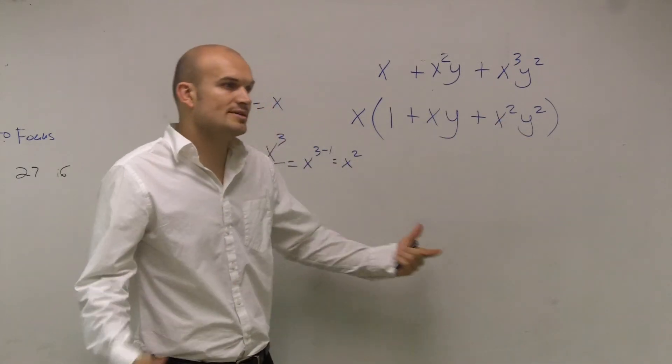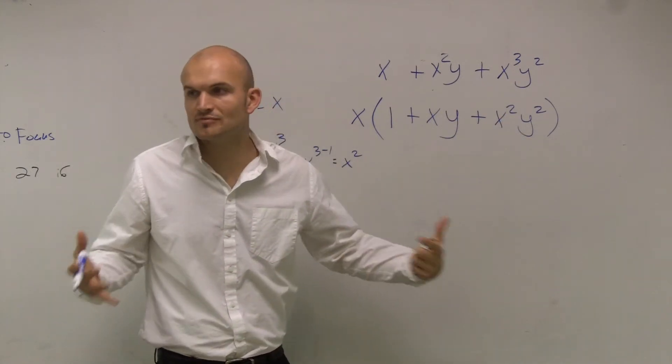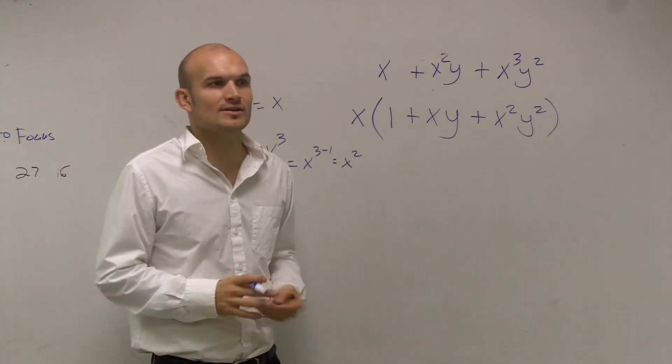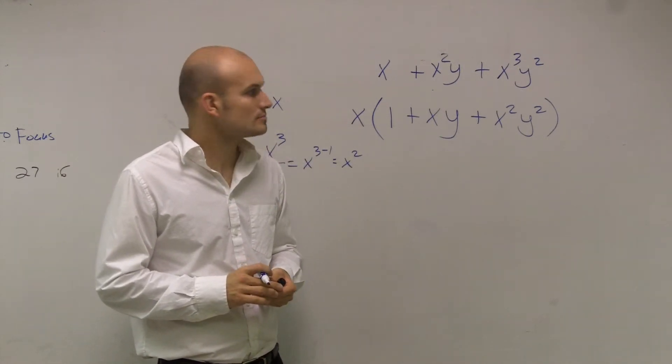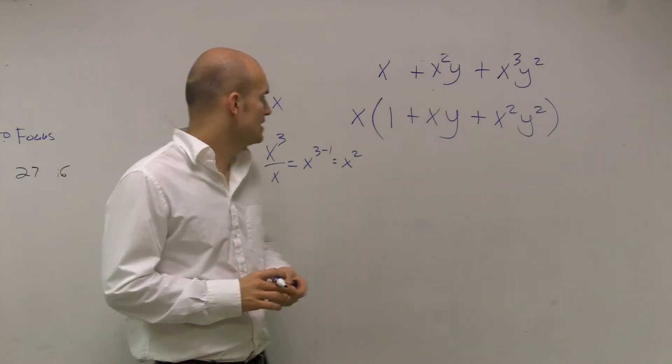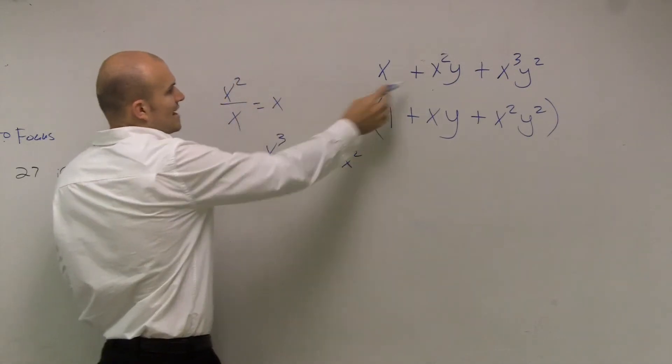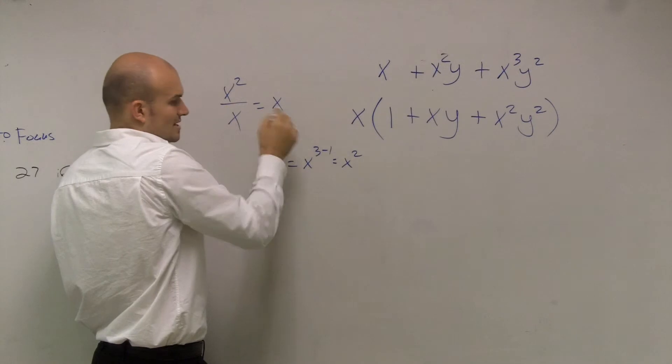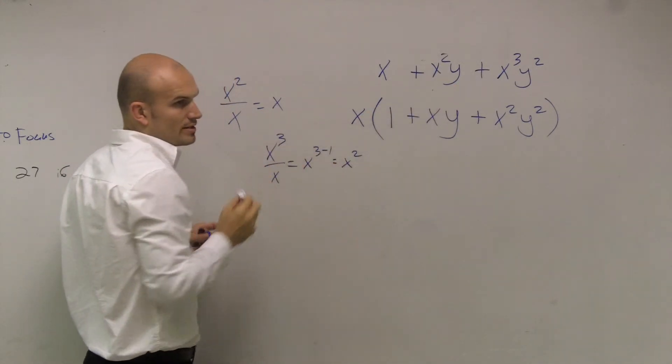So what that means, all I did was I broke it down into a multiplication of two factors. That's all factoring is. I was just doing the math. I was dividing x squared divided by x, which is x. Then I did x cubed divided by x, which is x squared.